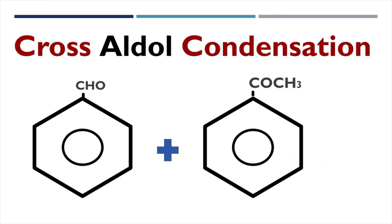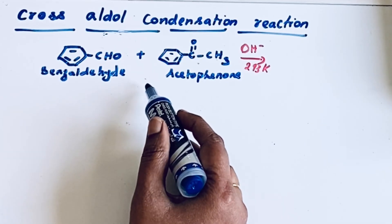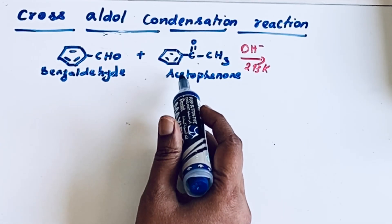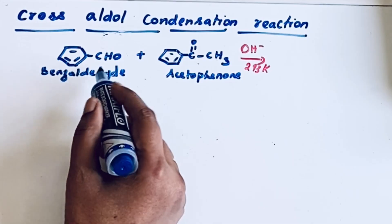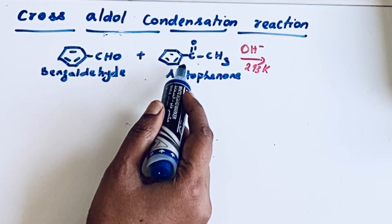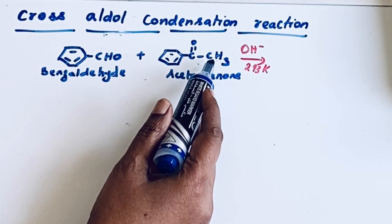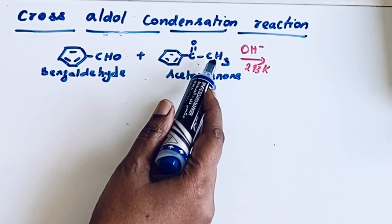We are here to discuss the cross aldol condensation reaction between benzaldehyde and acetophenone — that means one aldehyde and one ketone group. If you look at benzaldehyde, it does not contain alpha hydrogen, but in acetophenone there is the presence of alpha hydrogen.